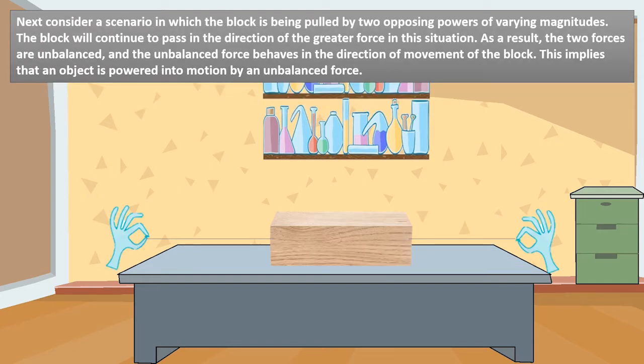The block continues to shift to the right as we add a force by pulling the string X. Similarly, pulling the Y string causes the block to shift to the left. The block, on the other hand, would not move if it is pushed from both sides with equal force. These forces are known as balanced forces and they do not affect an object's state of rest or motion.